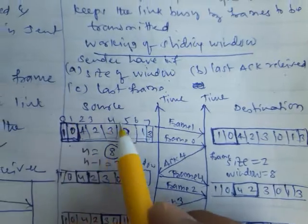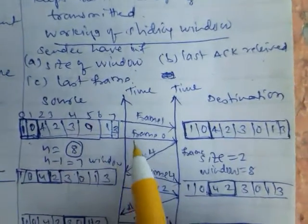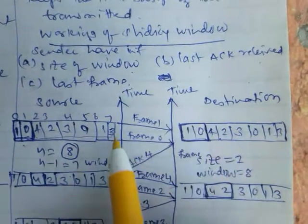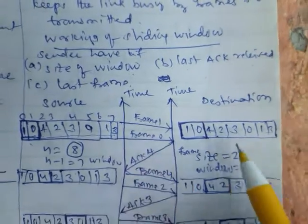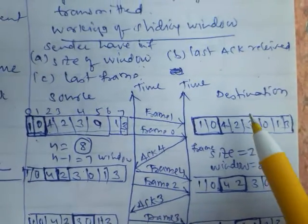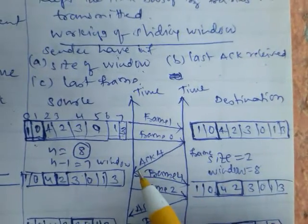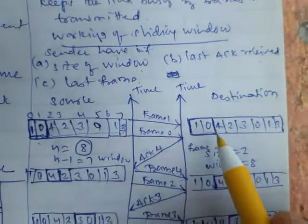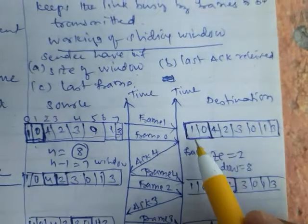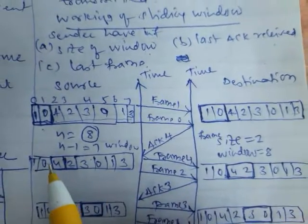Now I am sending, see, 2 frames from source to destination: frame 1, frame 2. Once it is received at the destination side, frame 1 and frame 2, then it will send the acknowledgement regarding the next frame. The next frame is the third frame, that is acknowledgement 4.